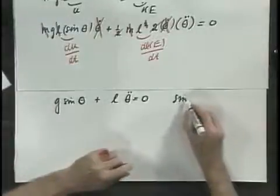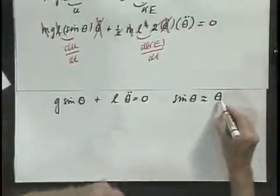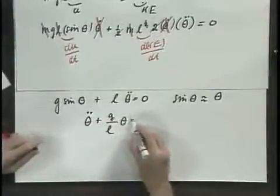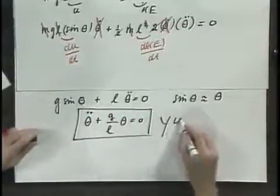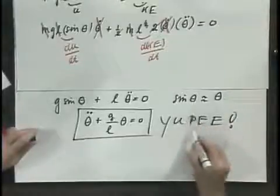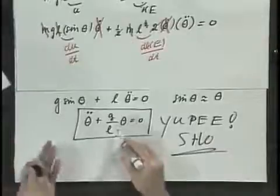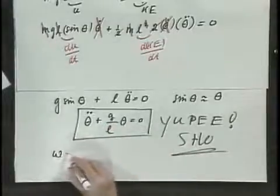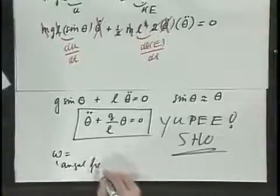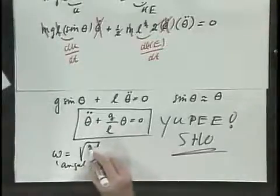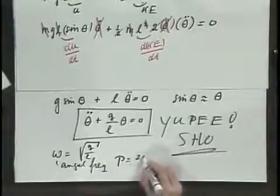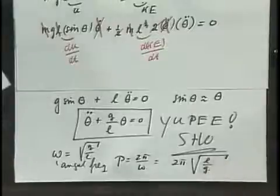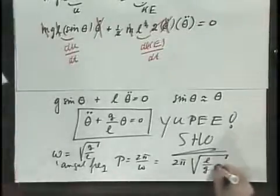Now, for the small angle approximation, sine theta is approximately equal to theta if theta is in radians. So I find that theta-double-dot plus (G/L) times theta equals zero. This must be a simple harmonic oscillator, because I immediately recognize the form: theta-double-dot plus a constant times theta equals zero. I can immediately write down that the angular frequency is the square root of G/L, and the period of oscillation — which is 2π divided by the angular frequency — equals 2π times the square root of L/G. This is, of course, no surprise; it is a very familiar result.